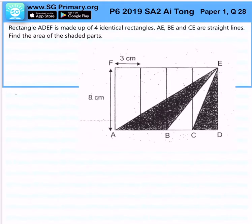Now, rectangle ADEF is made up of four identical rectangles. AE, BE, and CE are straight lines. Now, find the area of the shaded parts.